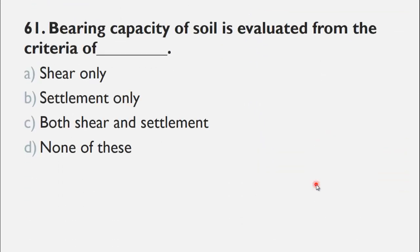MCQ number 61 is: Bearing capacity of soil is evaluated from the criteria of ___. A) shear only, B) settlement only, C) both shear and settlement, and D) none of these. We know that bearing capacity of soil is evaluated for both shear and settlement, so the right choice for this question is C, both shear and settlement.